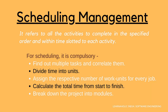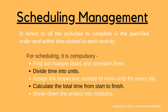The fourth activity is Scheduling Management. Scheduling Management in software refers to completing all activities in a specified order and within a time slot assigned to each activity. Project managers define multiple tasks and arrange them keeping various factors in mind. For scheduling, it is compulsory to find out the multiple tasks and correlate them, then divide the time into units, assign the respective number of work units per job, calculate the total time from start to finish, and break down the project into modules.